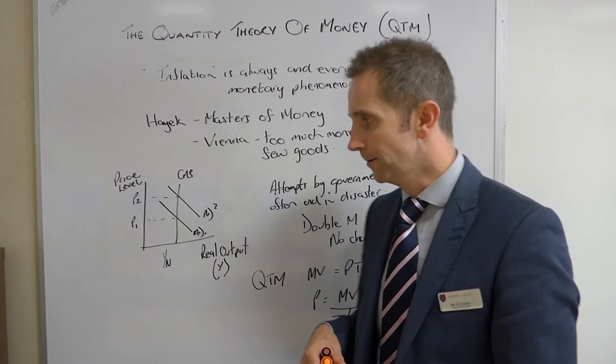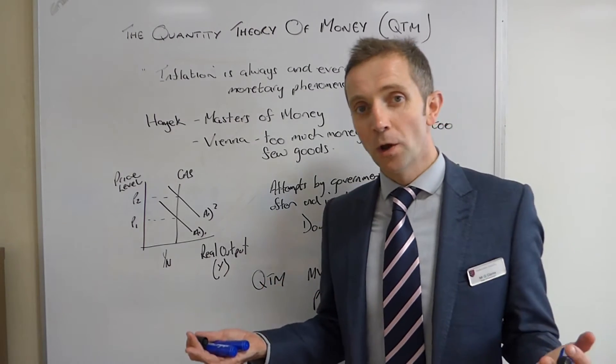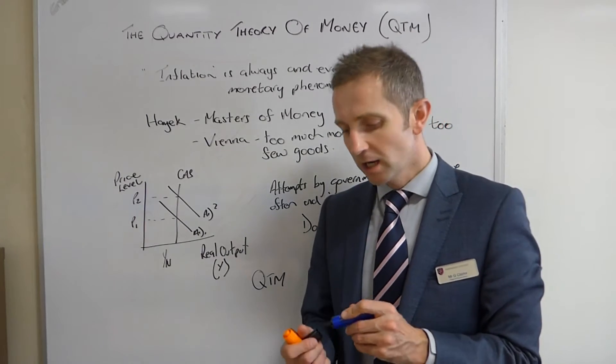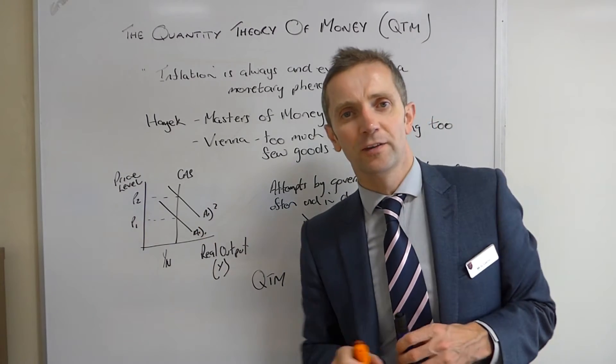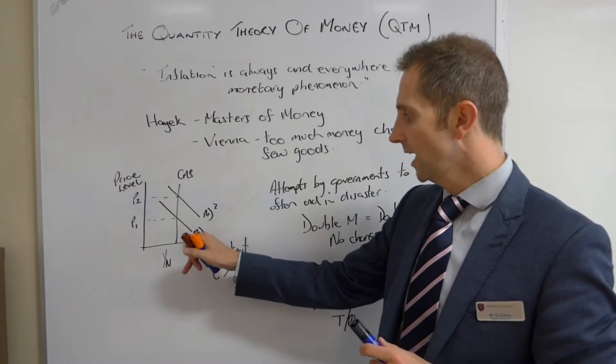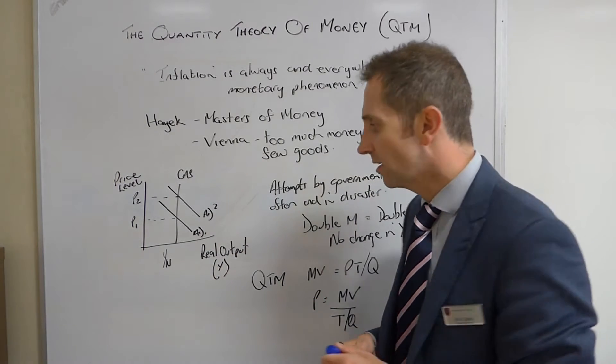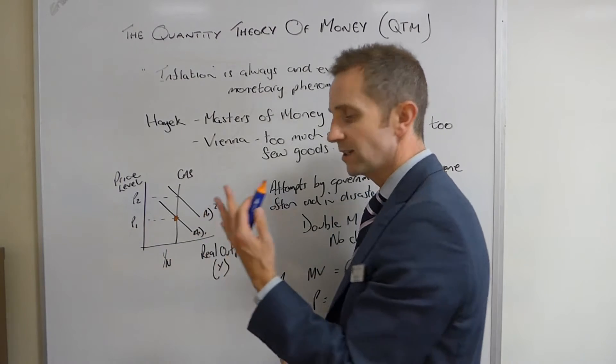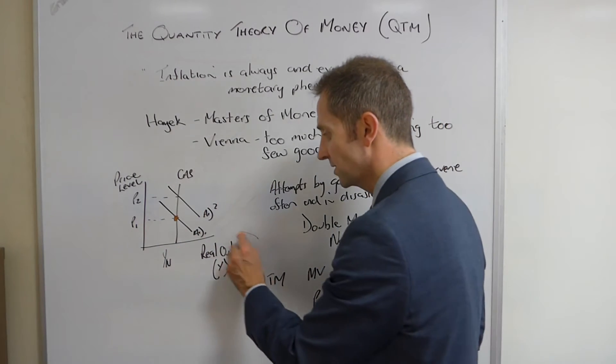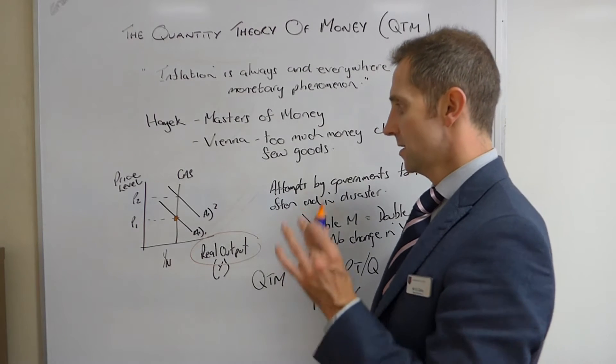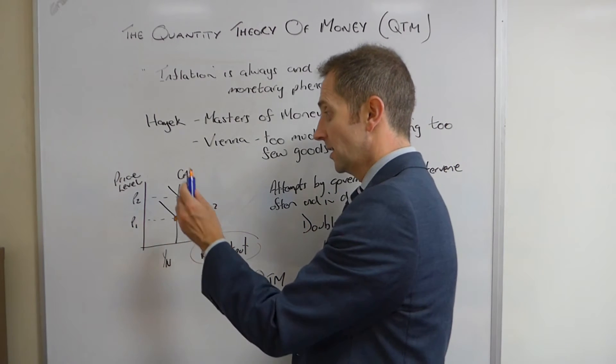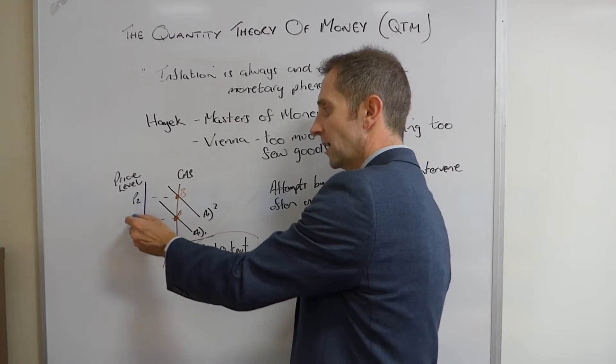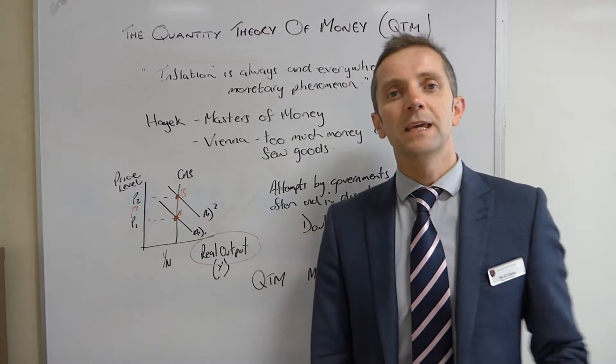According to classical theory, there will be no change in the level of output because the level of real output stays at its natural rate of YN. When you looked in your year one economic studies, you probably considered this diagram where we have the classical aggregate supply curve, perfectly inelastic, AD1 and AD2. As you can see on this diagram, any attempt to increase the size of the economy, to increase the amount of real output, only results in an increase in the price level because we're simply moving from A to B, jumping up from P1 to P2.